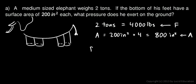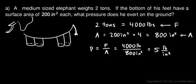And we just put those numbers into the equation. The pressure is how much force there is per area, or F over A. So that's 4,000 pounds divided by 800 square inches. And we do 4,000 divided by 800, and that comes out to 5.